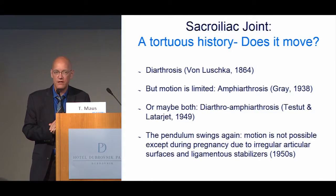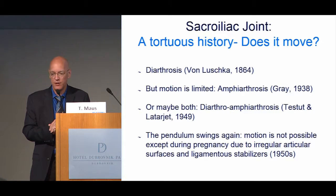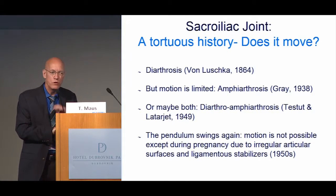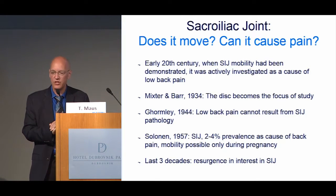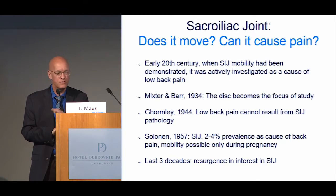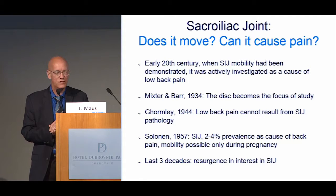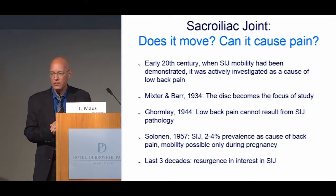In the late 1950s, it was again said that motion was only possible during pregnancy due to the very irregular articular surfaces and ligamentous stabilizers of the joint. But what's really important to us is not only does it move, but also does it cause pain? In the early 20th century, it was actively investigated as a cause of low back pain. But then Mixter and Barr came along in 1934, and the disc became the focus of all study of the low back. Gormley, even in 1944, said low back pain cannot result from SI joint pathology. In the last three or four decades, however, we have again identified it as a significant cause of low back pain.